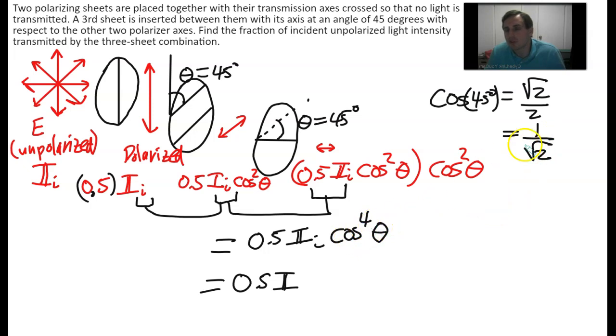Now 1 over the square root of 2 to the fourth should be the same thing as squared and then squared again. That's what it means to be to the fourth, because this is cosine of 45 degrees which is 1 over square root of 2. So you square that I think you get a half, but if you square that again you get a fourth.